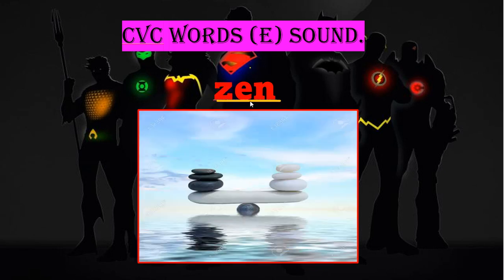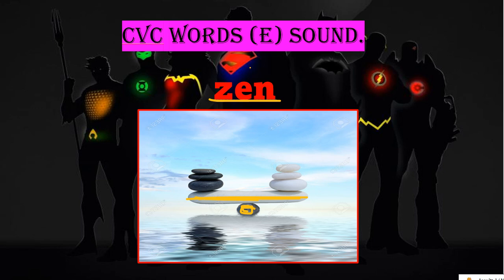Next, we have ZEN. Z-E-N. Zen means balance. If you see the black stone and the white stone, they form a balance. Even with just one stone holding others, they can keep the balance — that is zen. You can commonly find this word at a spa or in a historical place.